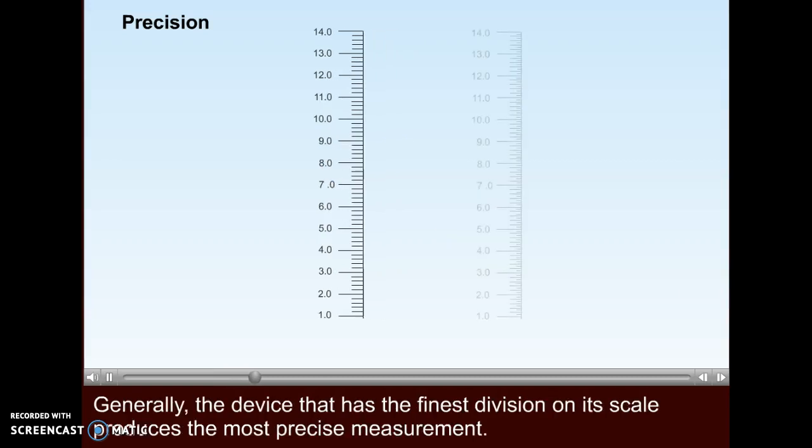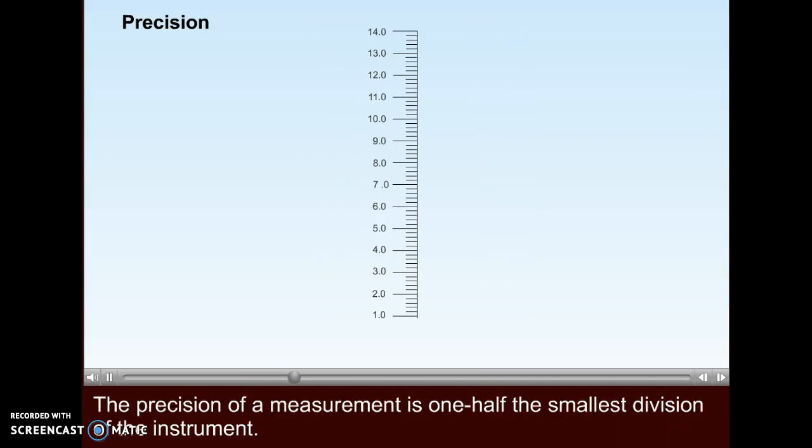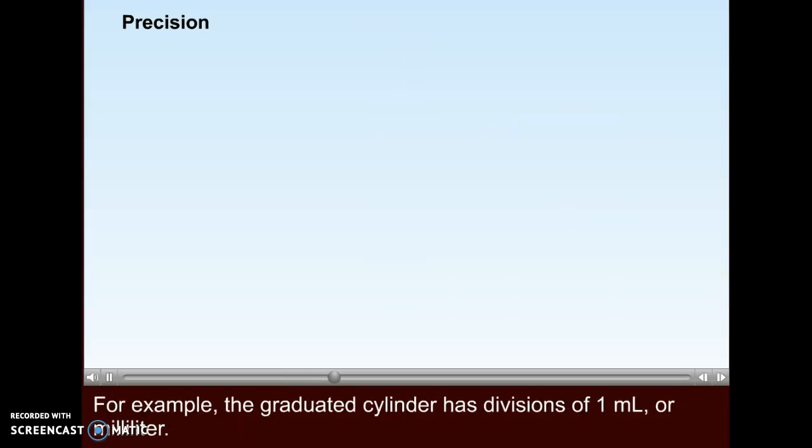Generally, the device that has the finest division on its scale produces the most precise measurement. The precision of a measurement is one-half the smallest division of the instrument.